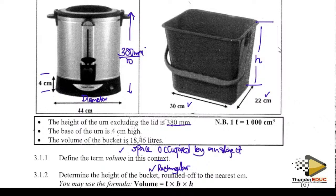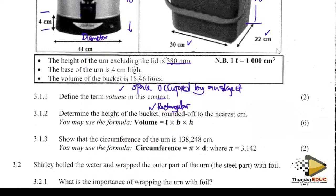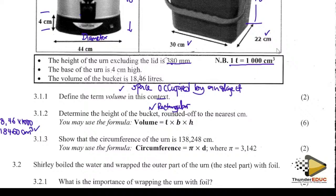We're going to use the volume formula: volume equals length times breadth times height. The volume of the bucket is 18.46 litres. We change 18.46 litres into cubic centimetres by multiplying by 1000, giving us 18 460 cm³. We know the length is 30 cm and the breadth is 22 cm. Substituting: 18 460 = 30 × 22 × H. Multiplying 22 × 30 gives 660.